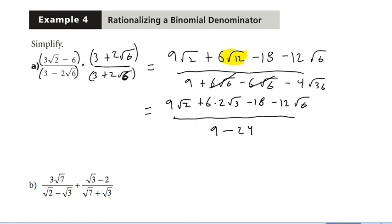Okay, now let's just do a little cleaning up on the top and the bottom. Notice there's no like terms on top. And then 9 minus 24 is negative 15. And normally now we'd multiply top and bottom by negative 1, just to get the negative off of the bottom.